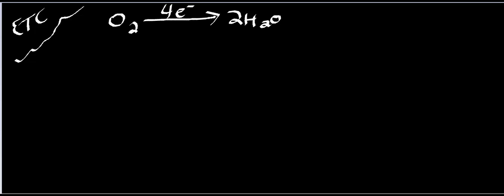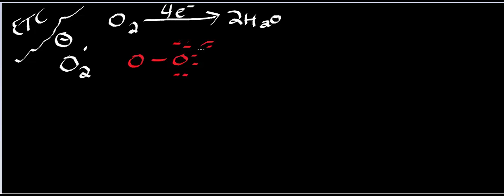So it is possible that the enzyme cytochrome C oxidase — which is supposed to hold on to the oxygen as it's being reduced — fails to hold on to it once in a while, and lets the oxygen go in the middle of the reduction. What you end up with is oxygen with a radical electron and a negative charge. I'll draw the Lewis structure of this in red because it's bad.